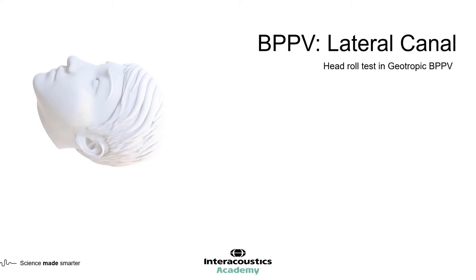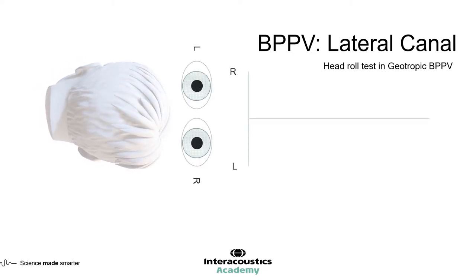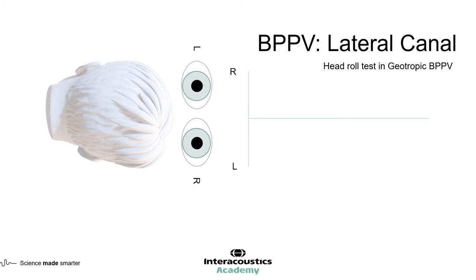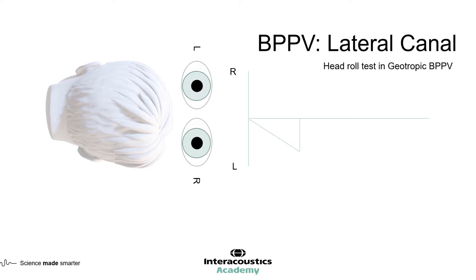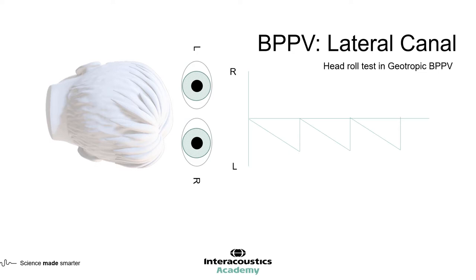The second part of the roll test is to bring the patient back to supine and roll them to the other side, so the right ear is now facing the ground. In the geotropic form, the eyes will move slowly to the left and then beat to the right — toward the ground — since the right ear is pointing down. So we have left-beating nystagmus when the head is to the left, and right-beating nystagmus when the head is to the right. Both nystagmus beat toward the ground, which is why we call this geotropic BPPV.